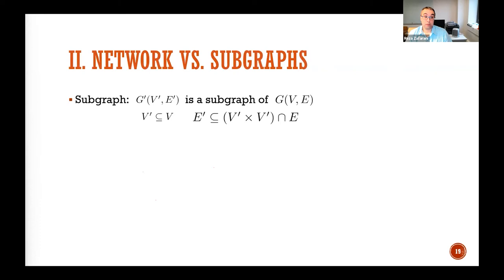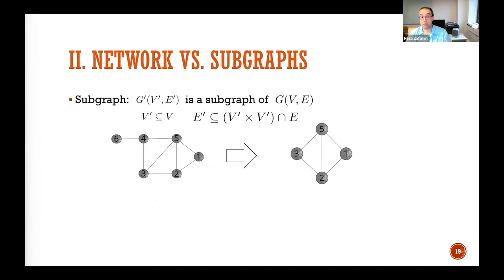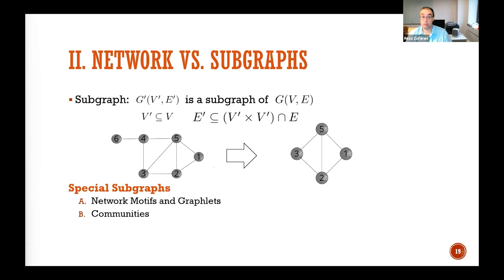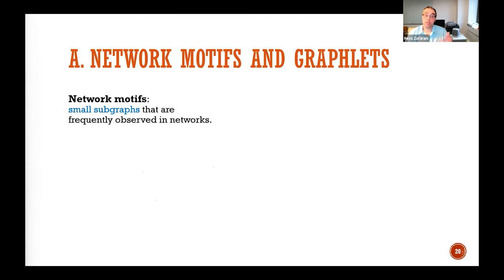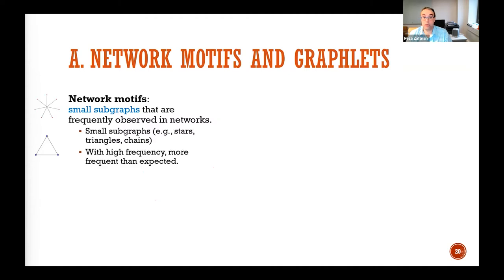You can also look at subgraphs — you don't have to use spectral graph theory. The idea is that if you get enough important subgraphs, that can describe or represent your graph. These special subgraphs could be network motifs or graphlets, communities, or sampled subgraphs. A network motif is a small subgraph that is frequently observed in networks.